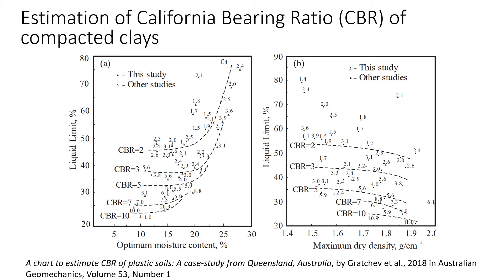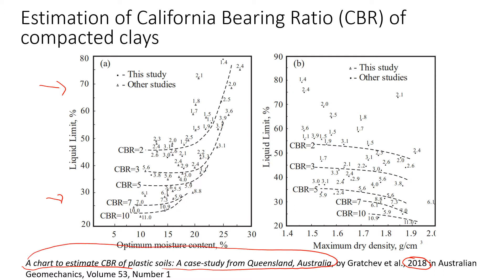Hi everybody. This video will be about how to estimate California Bearing Ratio of compacted clays. I'm going to show you two charts that you can use for this purpose. I took these charts from one of my previous works — published in 2018 in the Australian Geomechanics Journal. You can find the paper on the web or on my research group's web page.